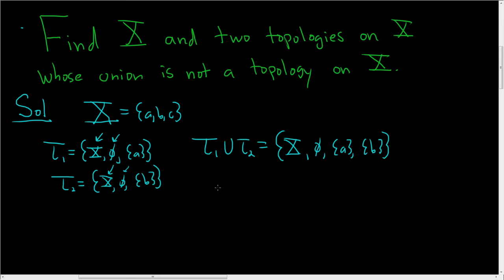And it's pretty easy to see why. So note, the singleton set containing a, the singleton set containing b. These are both open sets in tau 1 union tau 2.